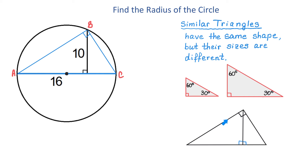I will show you through an example why in a right triangle, if we draw a perpendicular down to the hypotenuse, we get two similar triangles. Here we have a right triangle with the 90-degree angle. When we draw a perpendicular down to the hypotenuse, we also form two right triangles, each having a right angle. If this angle measures 60 degrees, then in the triangle to the right, this angle has to measure 30 degrees, because these two angles together have to make 90 degrees.